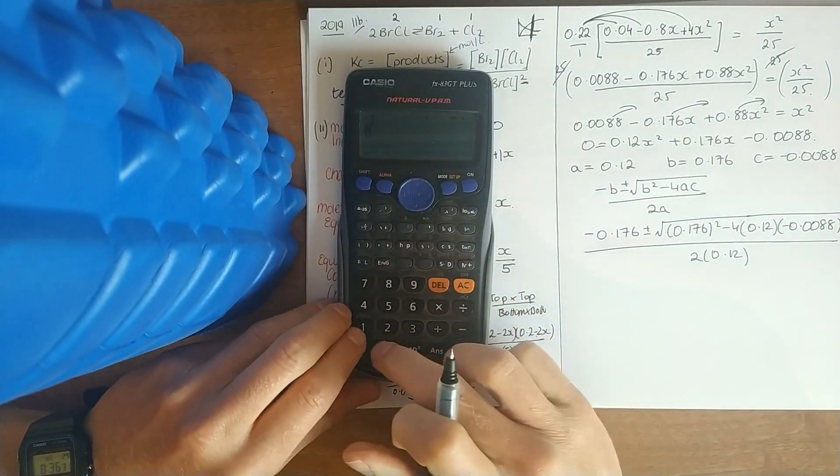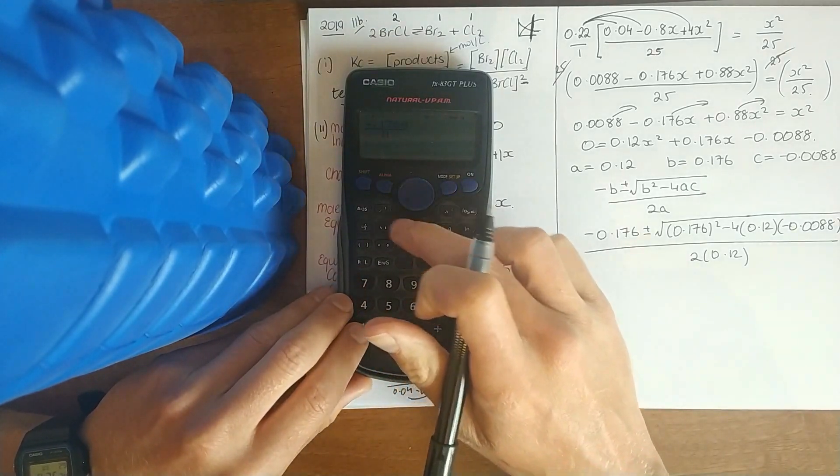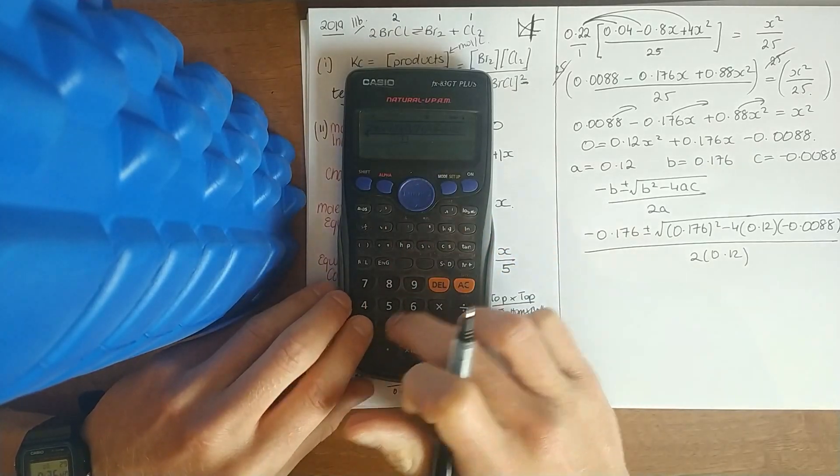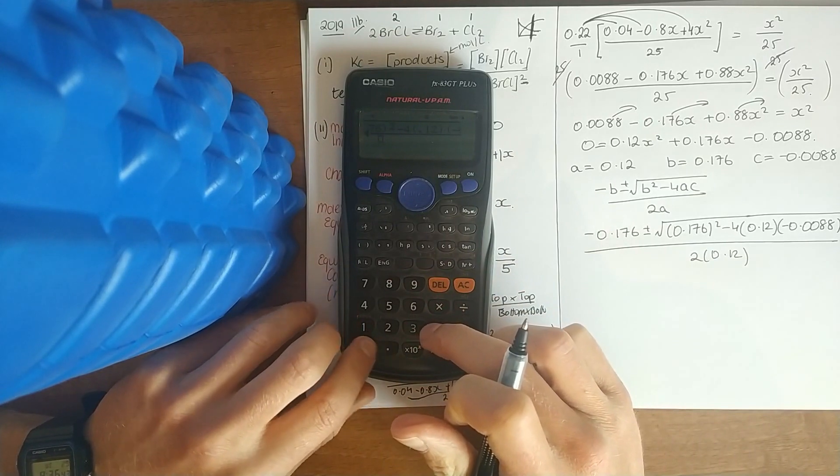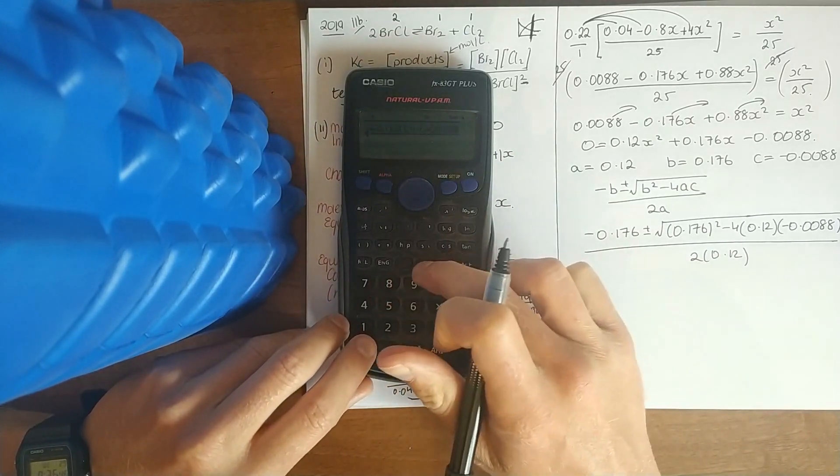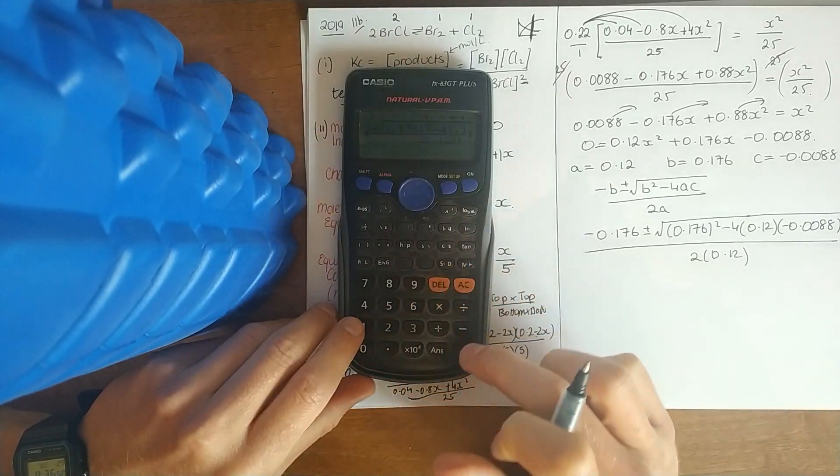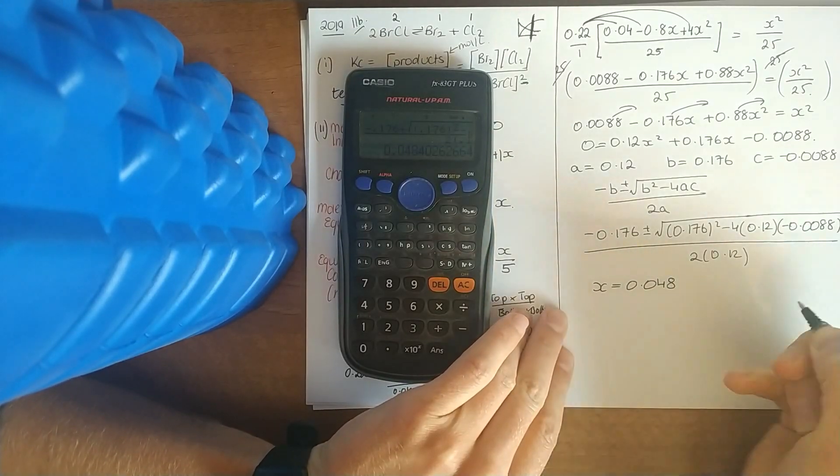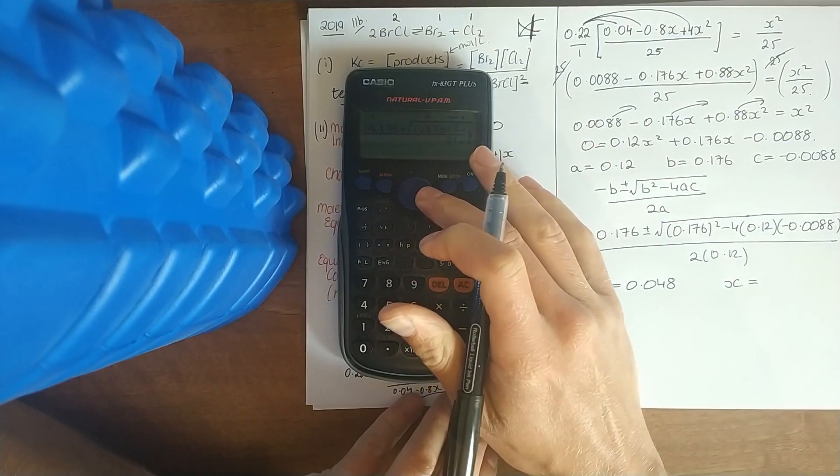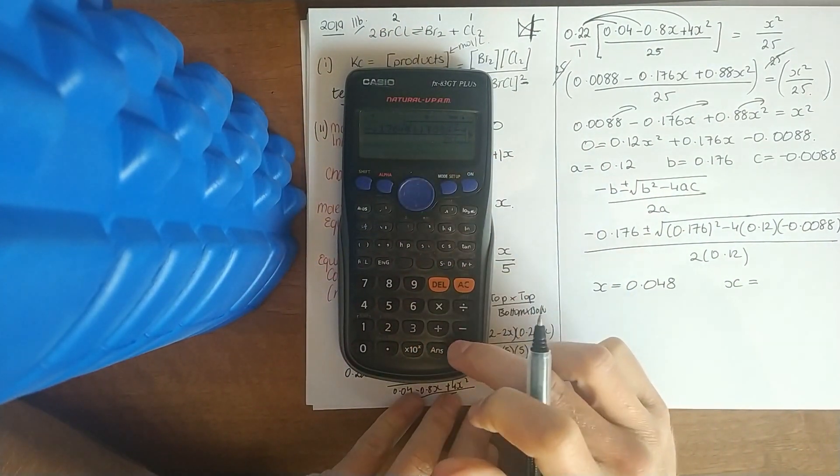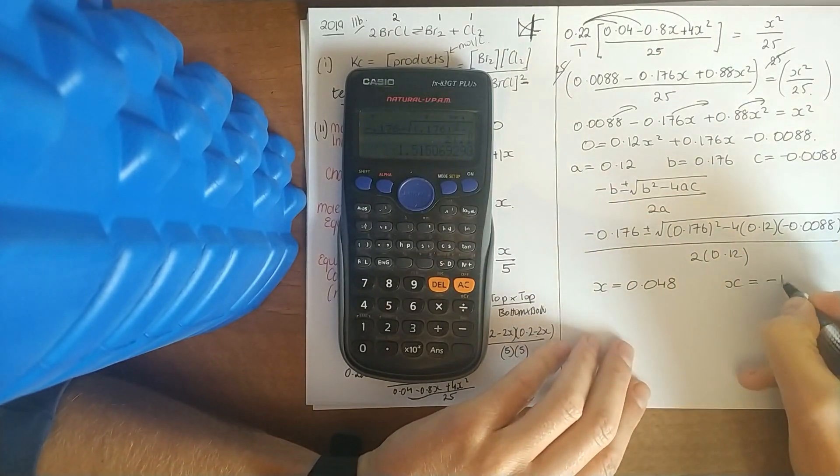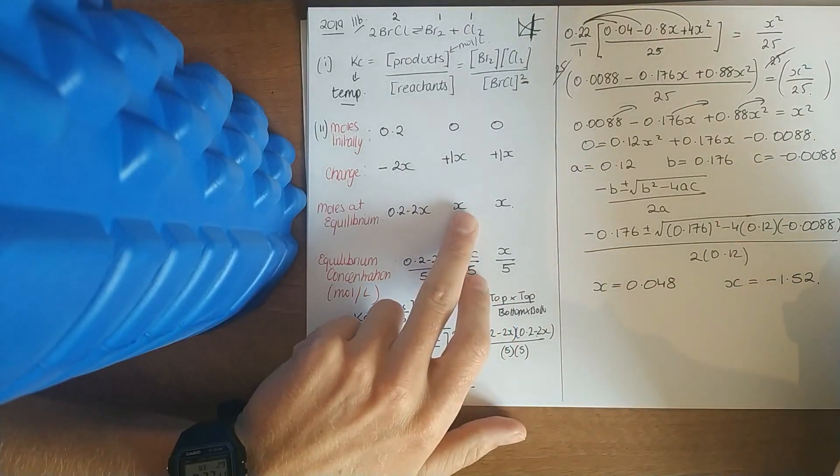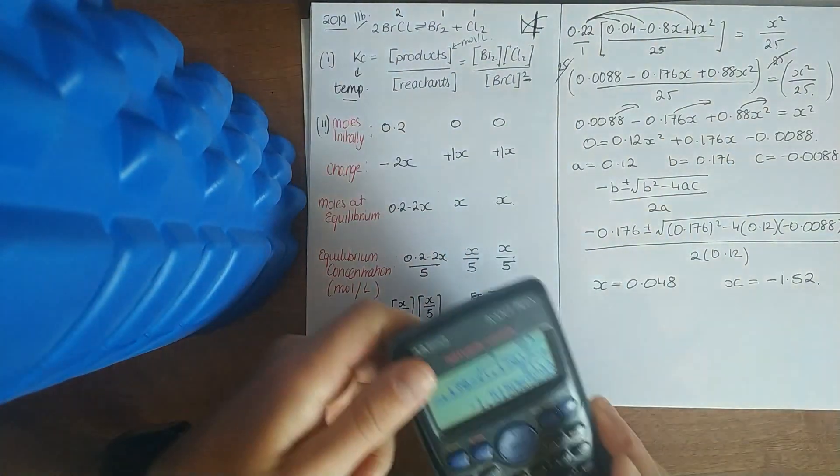We tidy that up. Minus 0.176 plus or minus the square root. We get 0.048 and change the sign, so minus, giving us minus 1.52. Now if you're looking, x represents these moles at equilibrium. I cannot have a negative value for concentration, so this is ignored. This is the one we take.